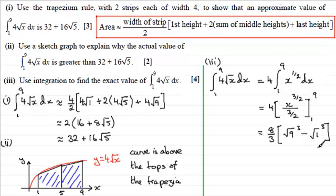We end up with 8 thirds, and now we've got the root of 9 is 3, cube it is 27. The root of 1 is 1, cube it is 1, so 27 minus 1 is 26. And 8 times 26 is 208, so you've got 208 divided by 3.